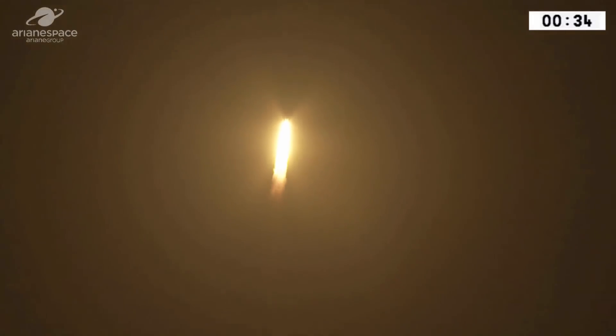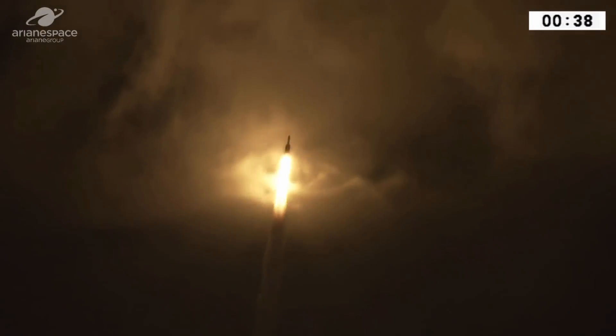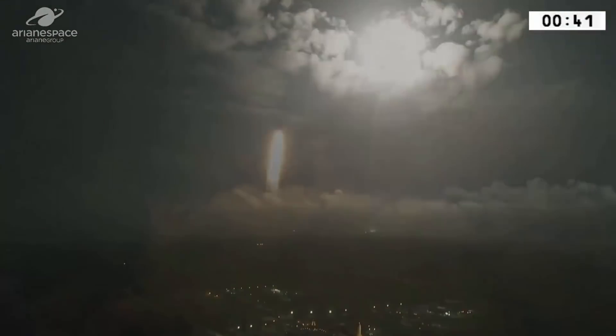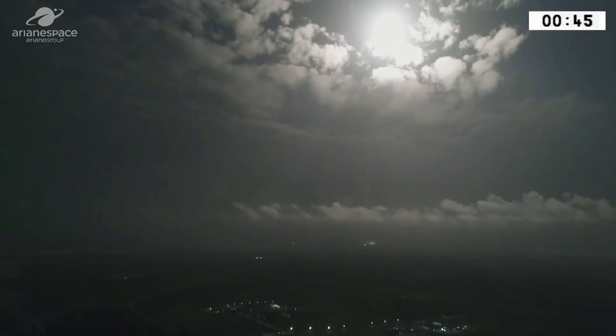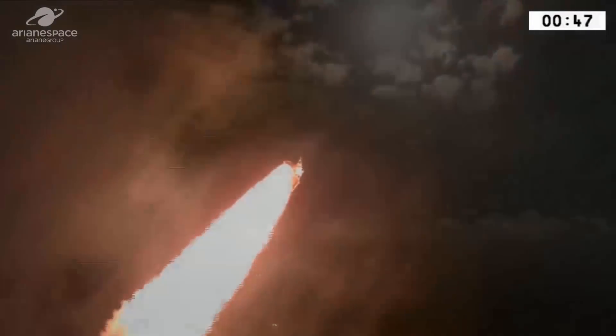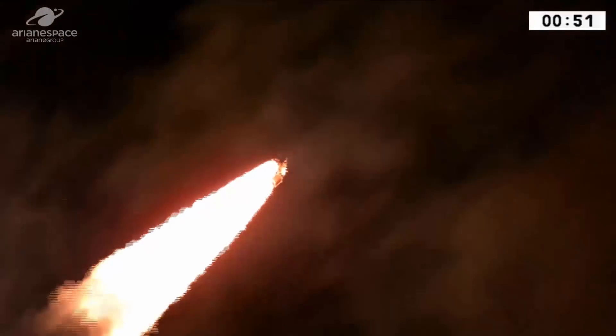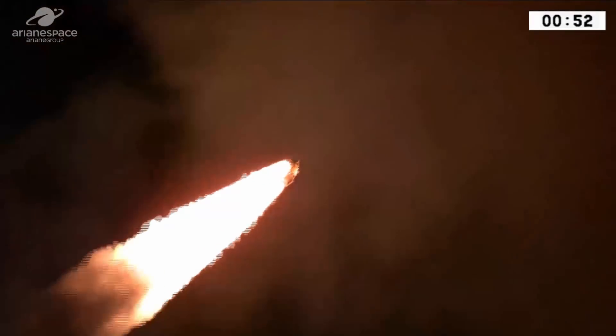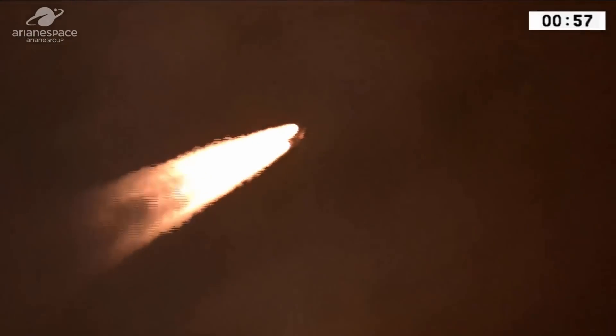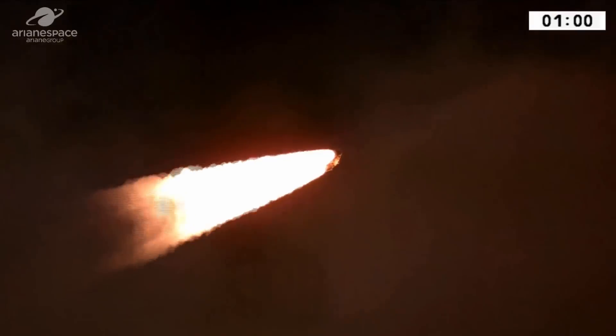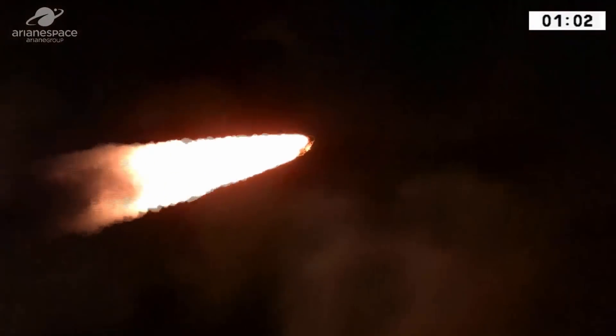So what happened was that the Ariane 5 veered off course during the launch. We don't know exactly what caused that, but since the telemetry data itself seemed fine, it seems to be a navigational issue. Since the rocket sent back data which indicated that it was on course, we have to assume that the navigation system on board the rocket was simply wrong, because so far investigation implies that the rocket was not perfectly on course even right after the launch.